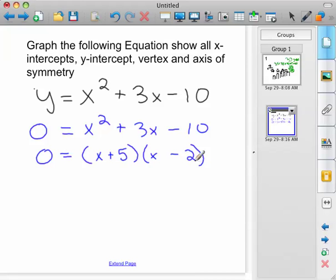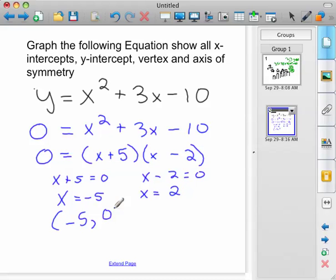So we know x plus 5 could be zero, or x minus 2 could be zero. So we know our x-intercept is negative 5, and the other x-intercept is positive 2. So we can graph the points negative 5, 0, and 2, 0.